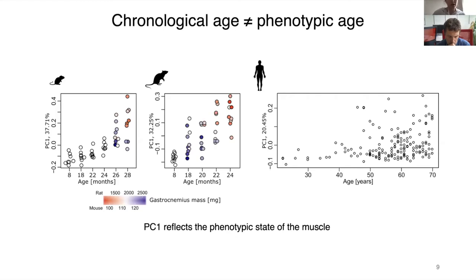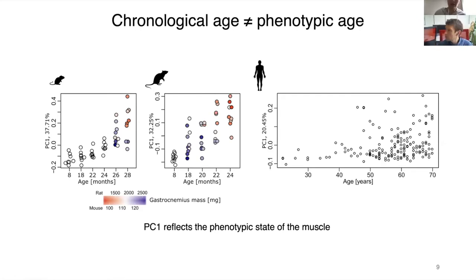To confirm this, we colored replicates showing variation within the age group by muscle mass available for rodent species. Indeed, samples with higher preserved muscle mass during aging had PC1 coordinates similar to younger replicates, while samples with increased muscle loss had higher coordinates than other samples for both species. We concluded that principal component one reflects muscle health rather than chronological age.